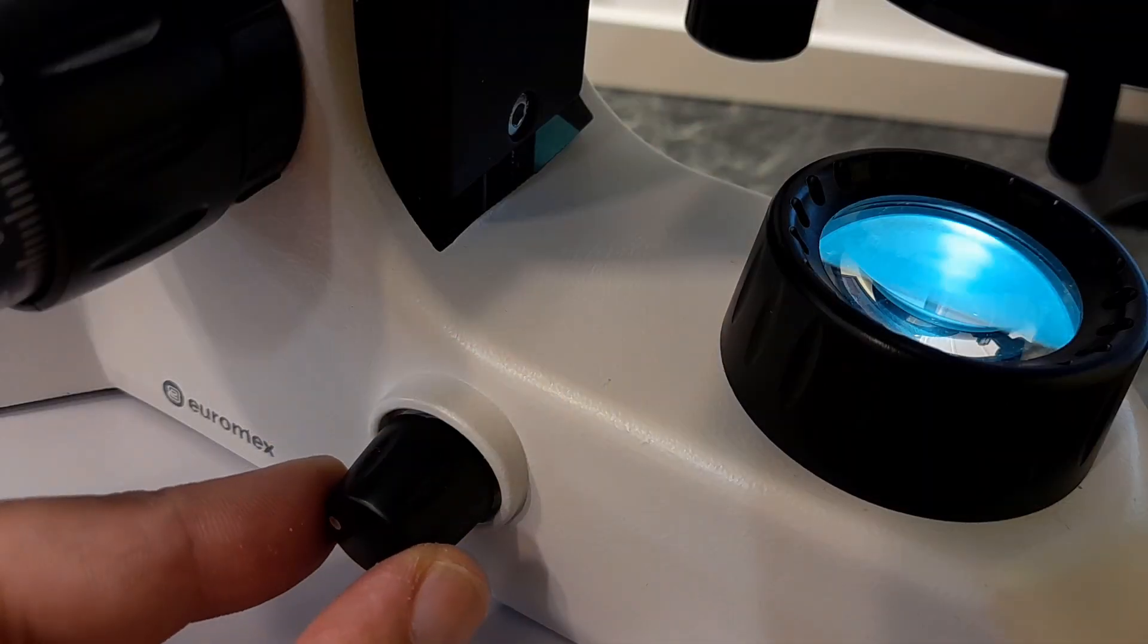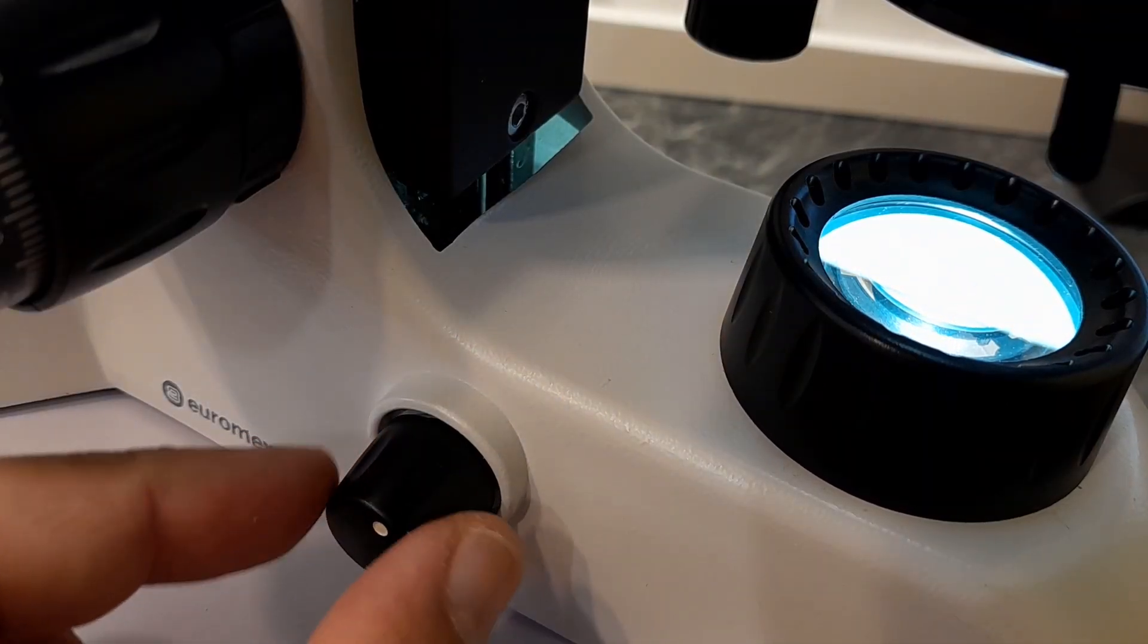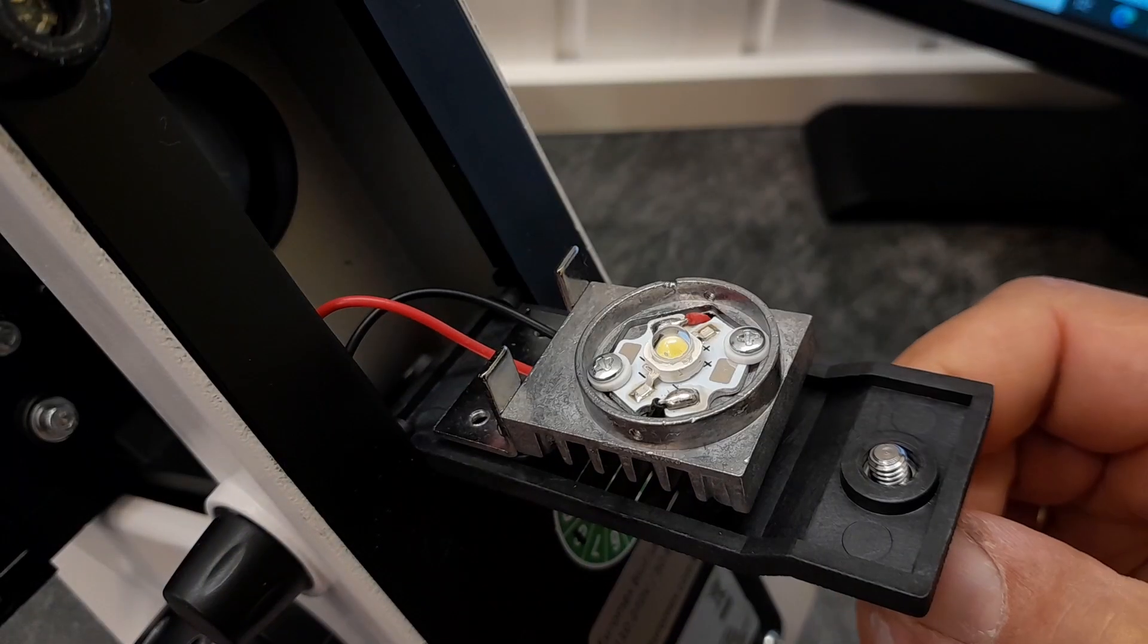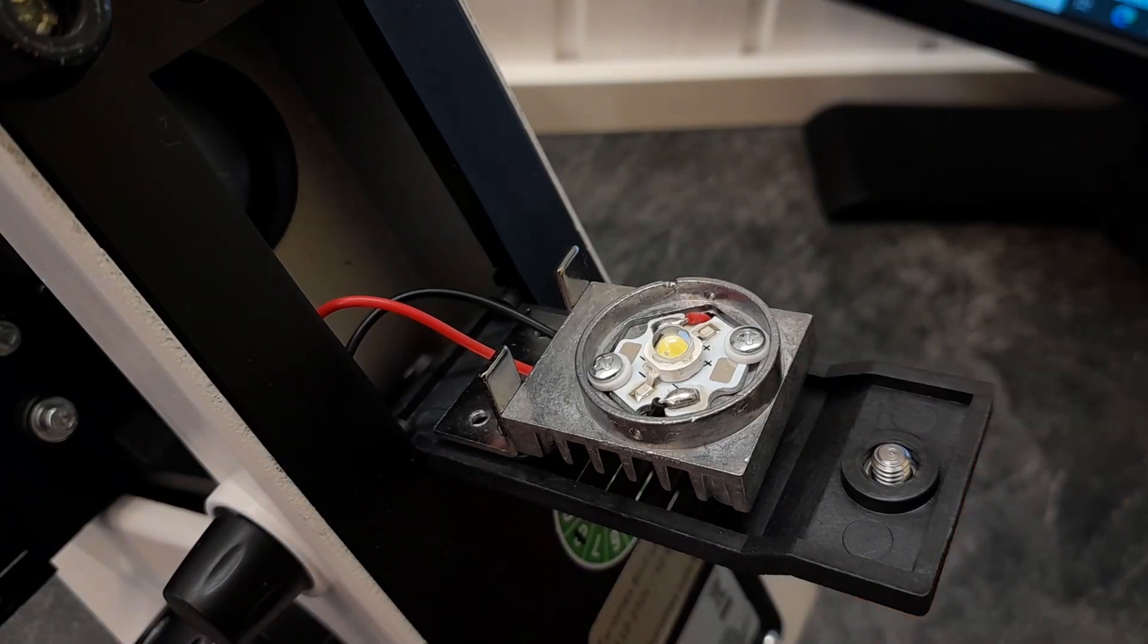The LED can also be adjusted. The LED brightness, so there is the main switch in the back but the brightness can be adjusted by turning a knob on the side here. The LED is also easily accessible and should there be the unlikely necessity to exchange the LED then this is also possible.